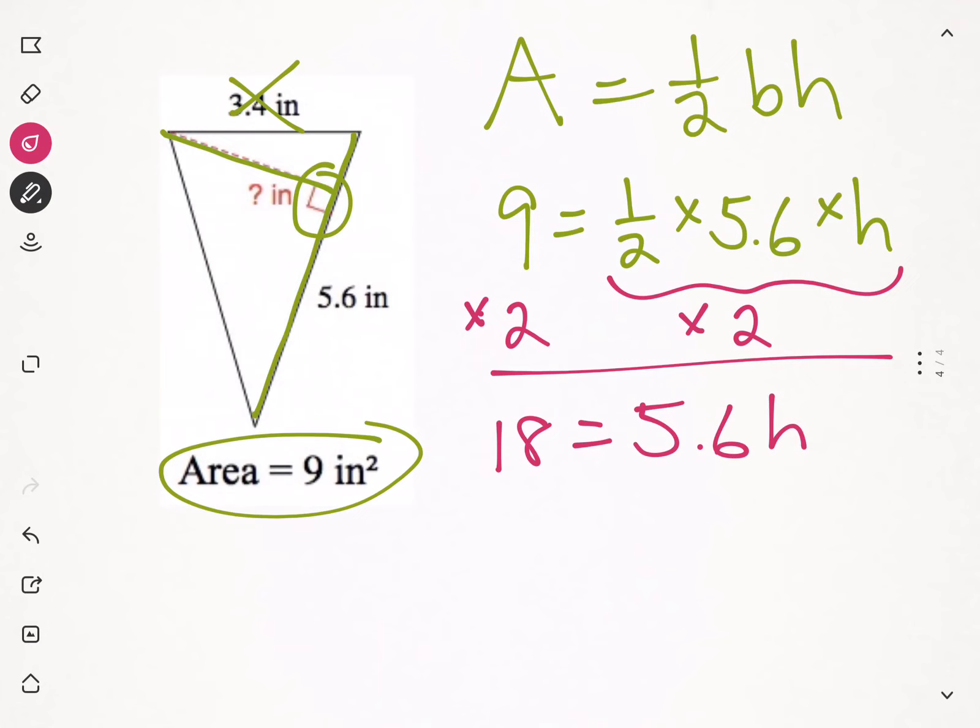Next step, we divide by the base. So, 18 divided by 5.6. And then we get height equals approximately 3.21 inches.